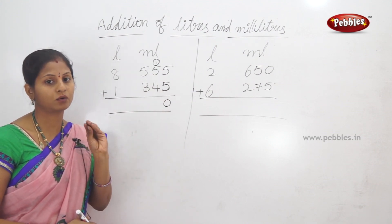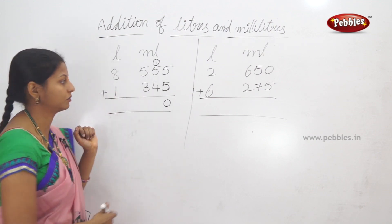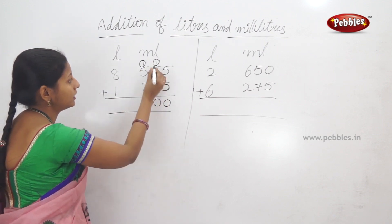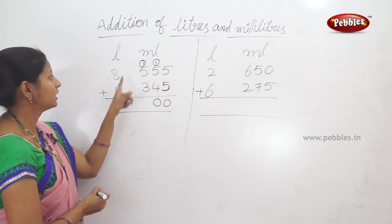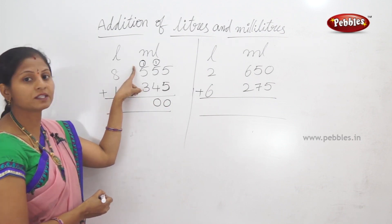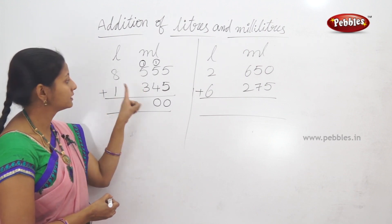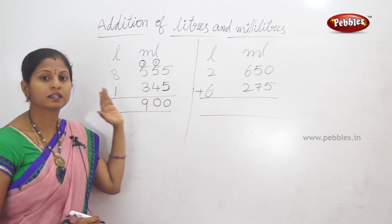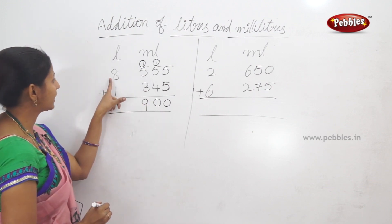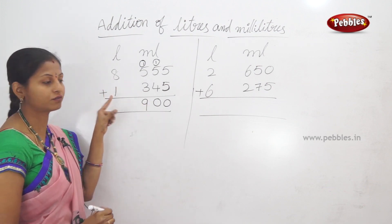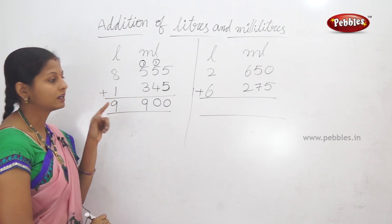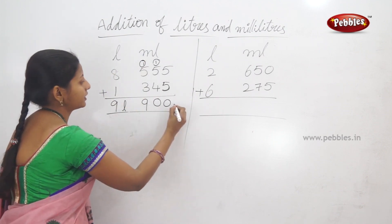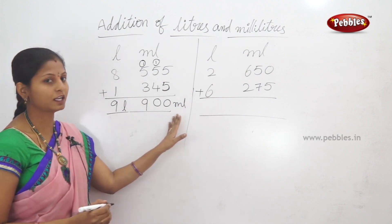Next: 1 plus 5 plus 3. 1 plus 5 equals 6, and 6 plus 3 equals 9. So milliliters total is 900. Then we add liters: 8 plus 1 equals 9. So the answer is 9 liters 900 milliliters.